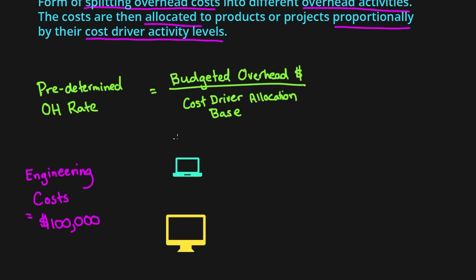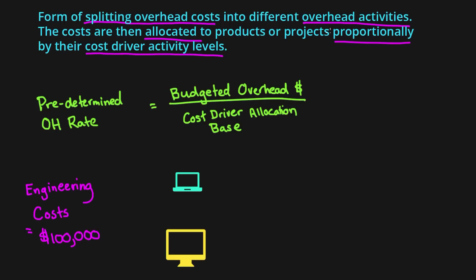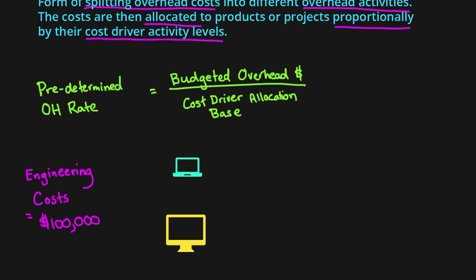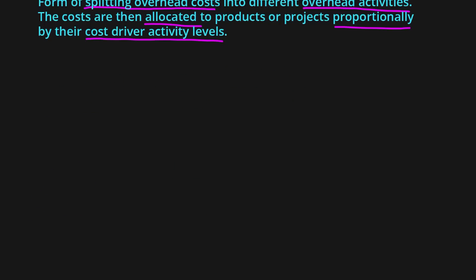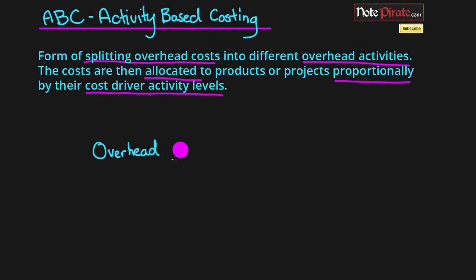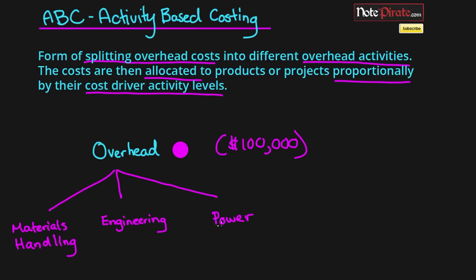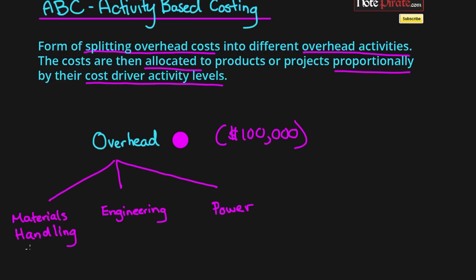Yes, of course! So that's what we're going to be doing — allocating overhead costs proportionally based on their cost driver activity levels. We're first going to split the overhead costs into separate overhead activities. So we have a total of one hundred thousand dollars of overhead, and we're going to split it into three different activities: materials handling, engineering costs, and power costs.